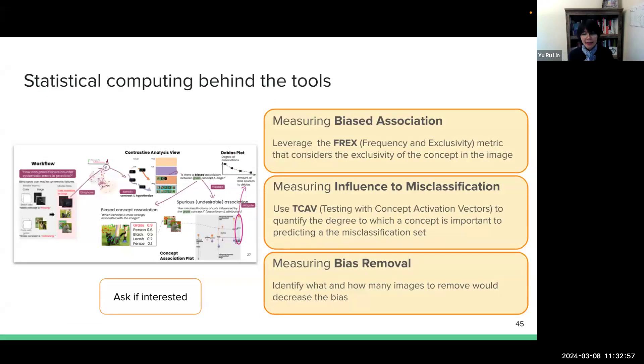Okay, and there are several statistical methods behind the system, including the metrics for measuring the biased association, and metrics for measuring the influence to misclassification, and metrics for this bias removal. So we can talk in more details offline if you are interested.